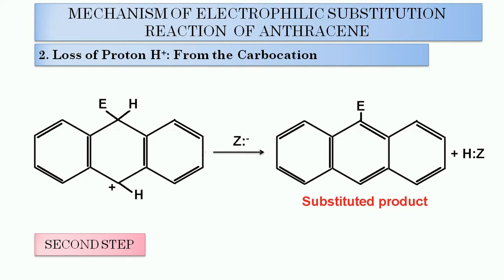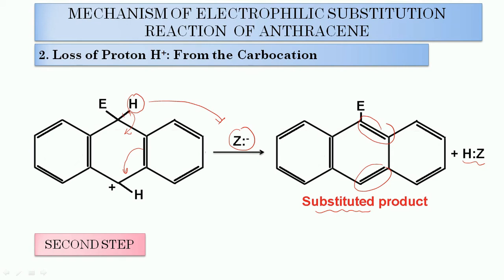Now, step number 2 will involve the loss of a proton from the carbocation, and it is assisted by the nucleophile formed in step number 1. It can lose this proton with the formation of H⁺. The two electrons of this bond will take part in pi bond formation between these two carbons, and this pi bond will go back. So there is the formation of another pi bond, and finally the substituted product will get formed. So step 2 is the loss of the proton from the carbocation.